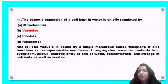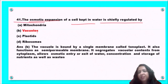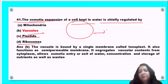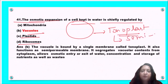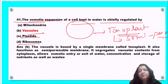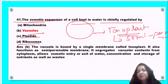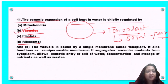Next question: the osmotic expansion of a cell taking in water is chiefly regulated by mitochondria, vacuoles, plastids, or ribosomes? A vacuole is bounded by a single membrane called the tonoplast, which is semi-permeable. It segregates vacuolar contents from the cytoplasm, allows osmotic entry of water, and stores various nutrients. So option B, vacuoles, is the correct answer.